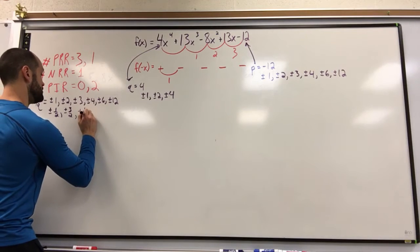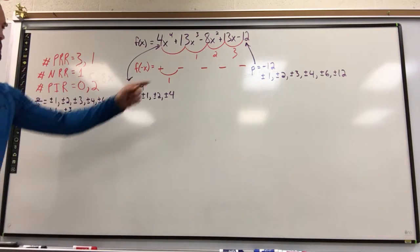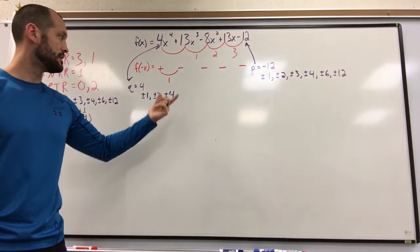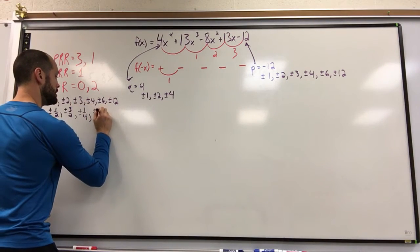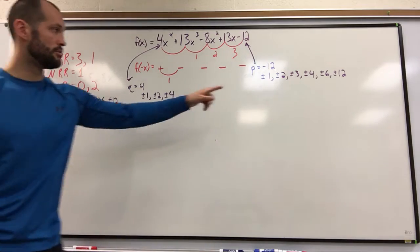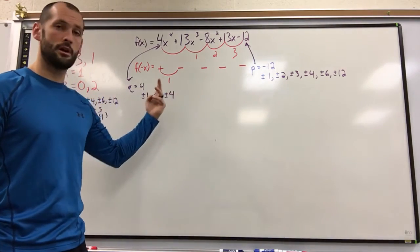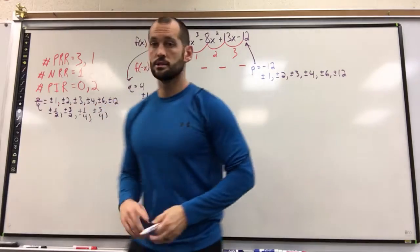Well, 1 fourth. There's a new one. 2 over 4? Nope, that's a half. 3 over 4? There's a new one. See if there's any more. 4 over 4? No. 6 over 4? No. 12 over 4? No.